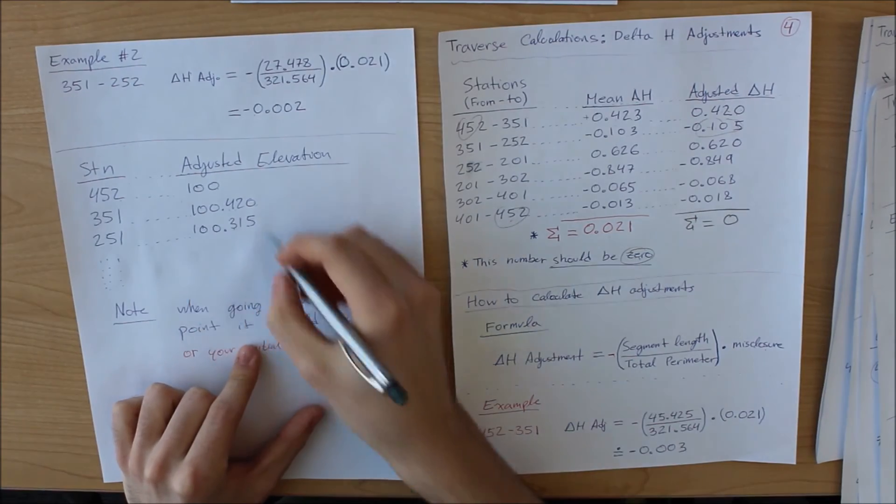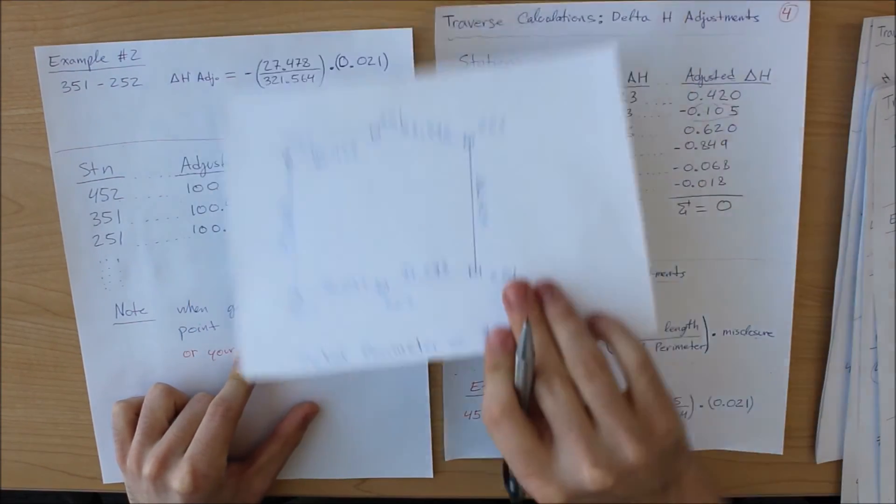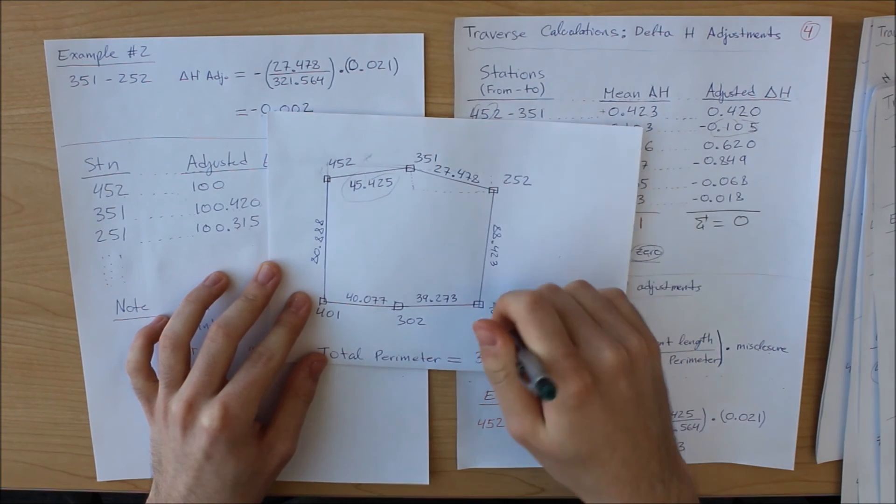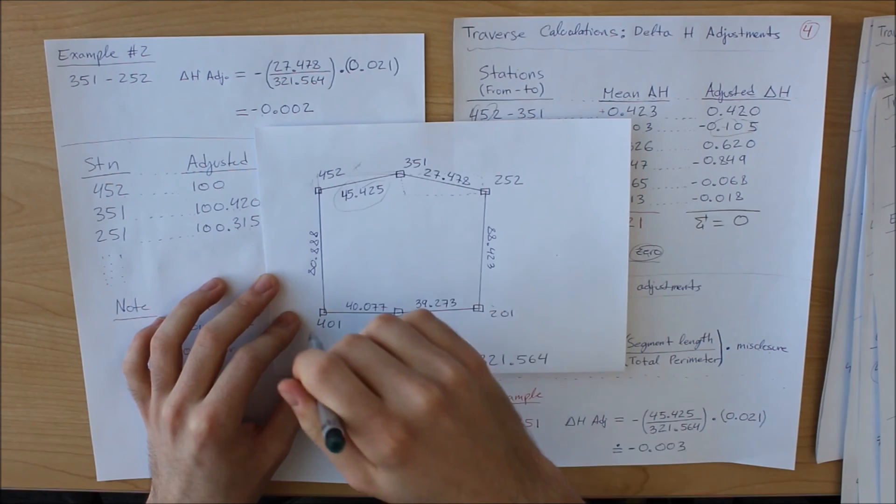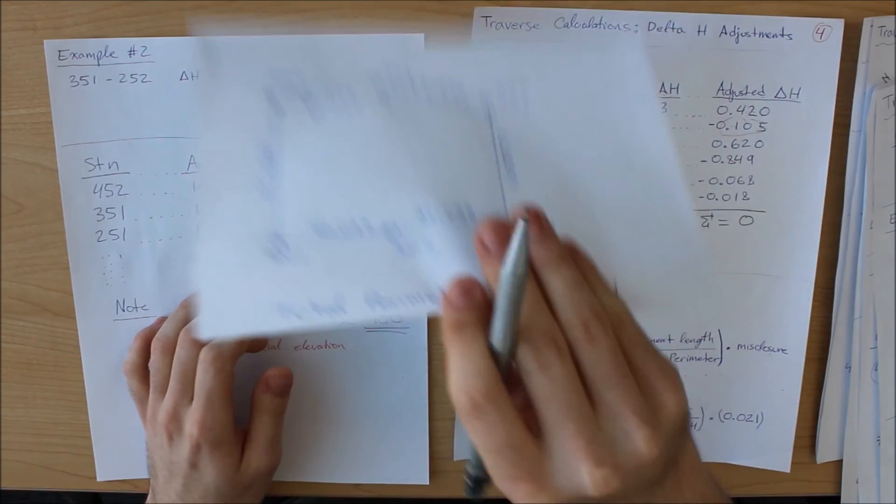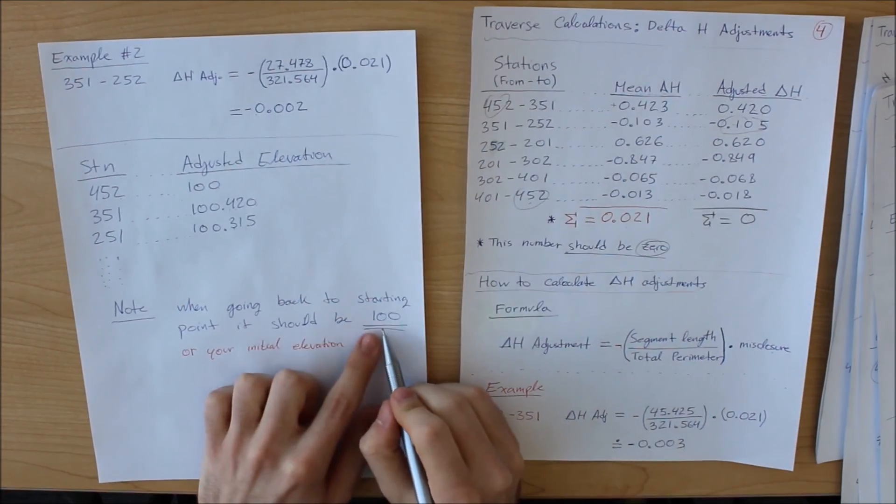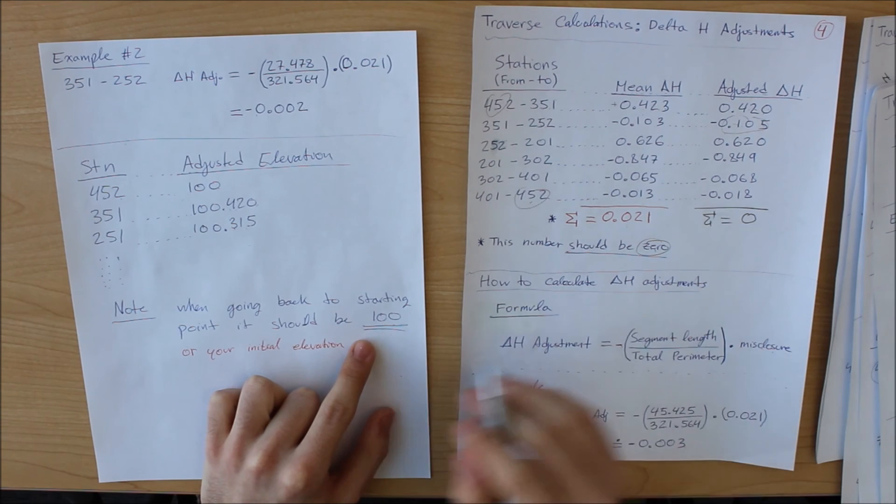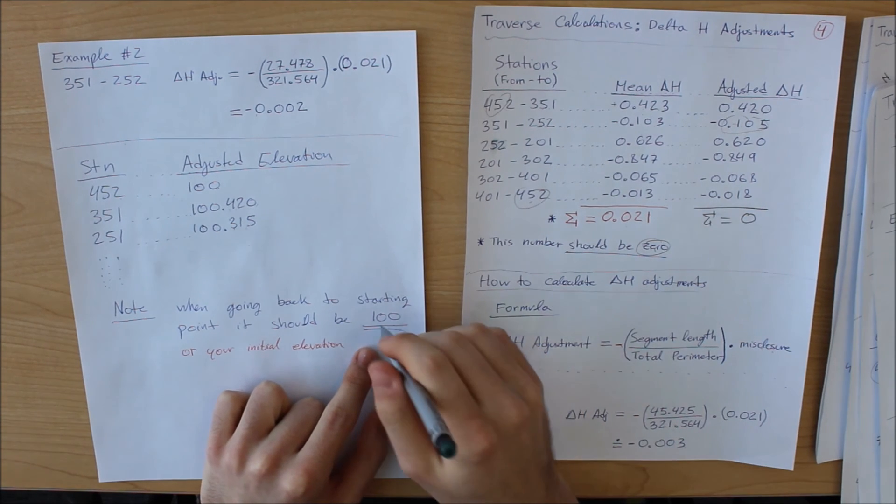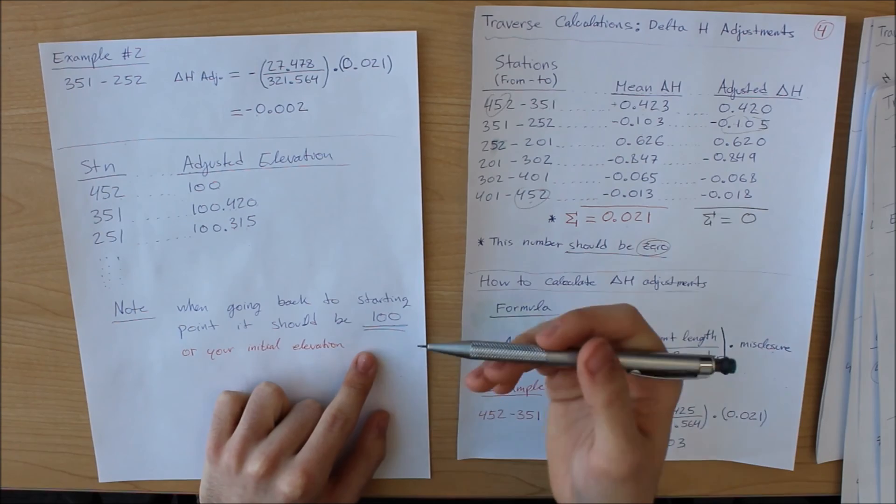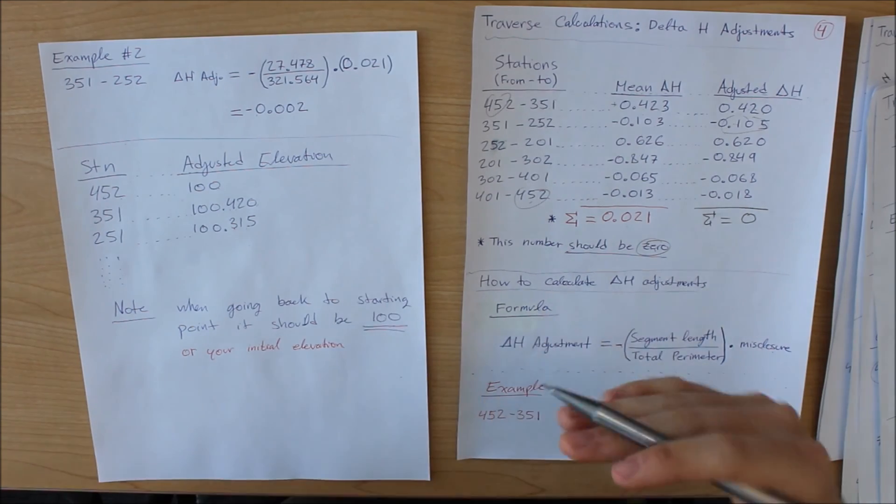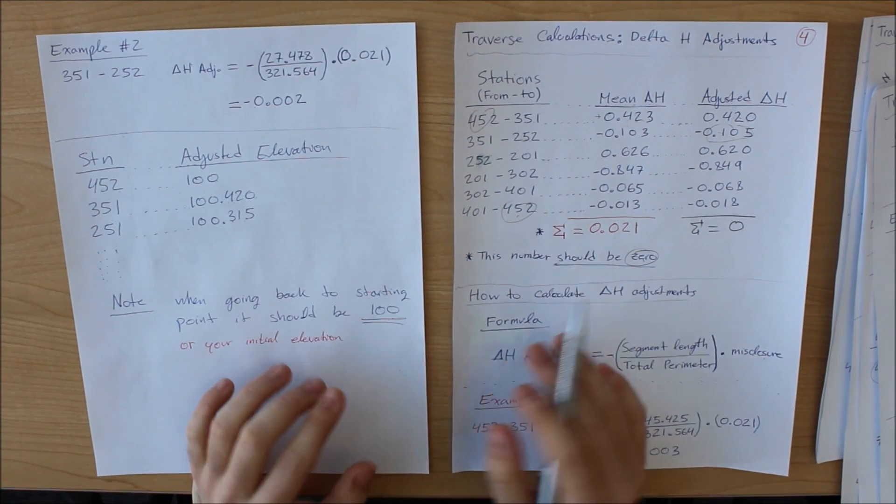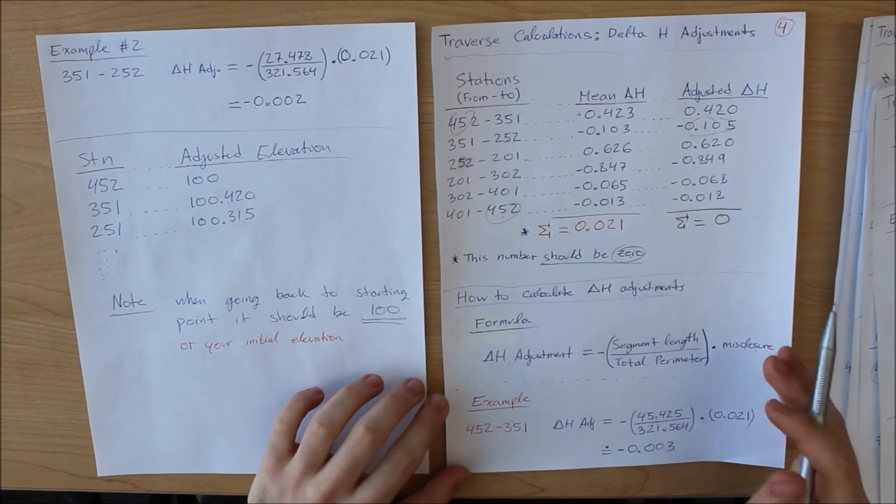Now, notes: when you get back to your original point, that is, once you start here, you work through each one, going in a positive clockwise direction. Once you get back to one, it should be the original, which is 100. If it's not, then that means you've made some error along the way. Now, again, this is the elevation that I was given. Your starting elevation might be different. But the point is, once you get back to the original one, after you've worked through each one separately, it should be the original one. Now, that is how you adjust the elevation for each of your points.